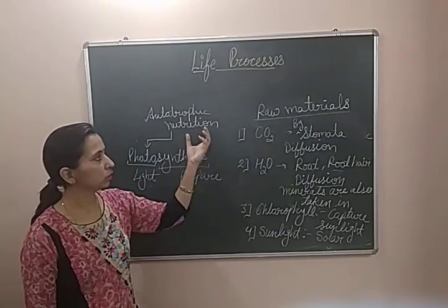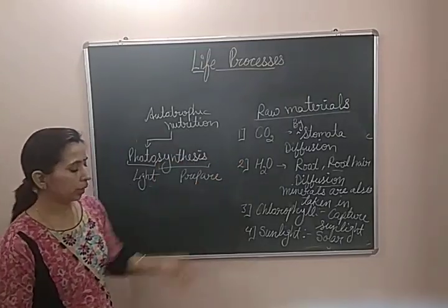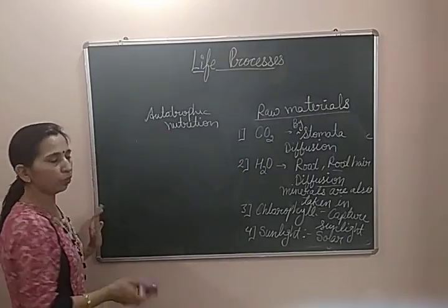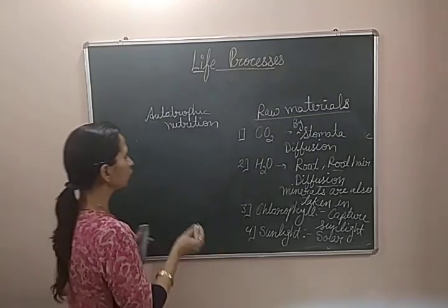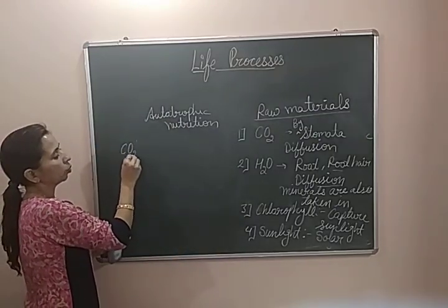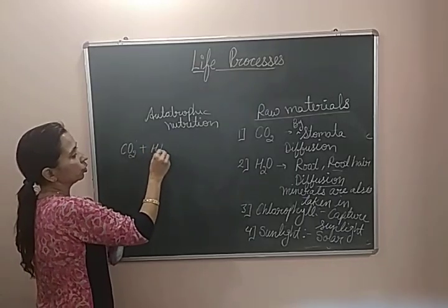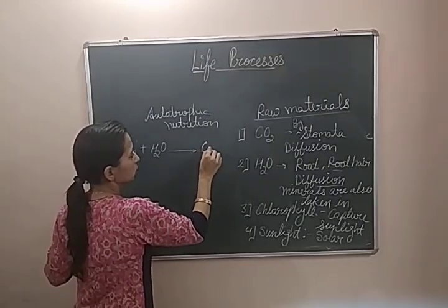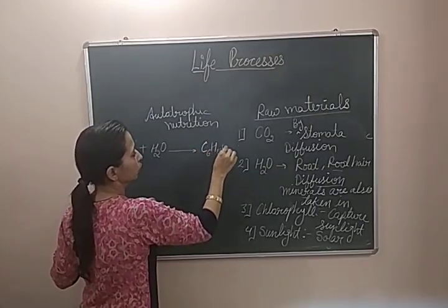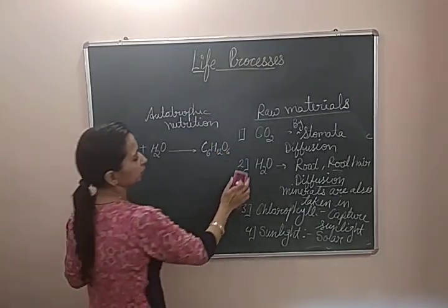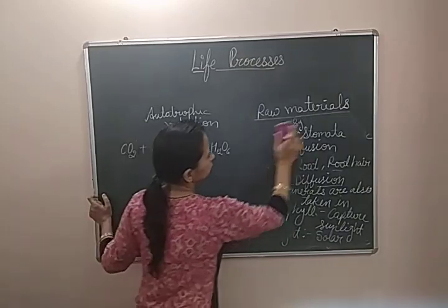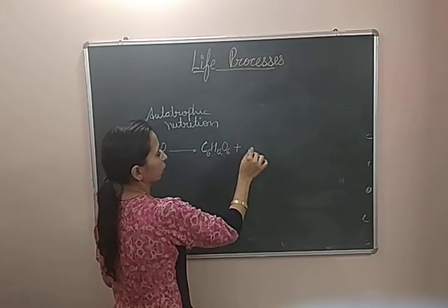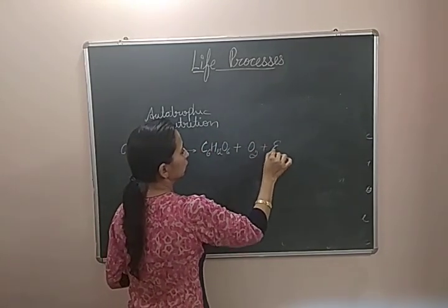Now let's see the equation of the photosynthesis process. We can explain the complete process in the form of a single equation. For photosynthesis, carbon dioxide is required; with carbon dioxide, water molecules are joined, and then they form C6H12O6 — this is the general formula of glucose — plus oxygen, plus energy. Water is also liberated in this process.